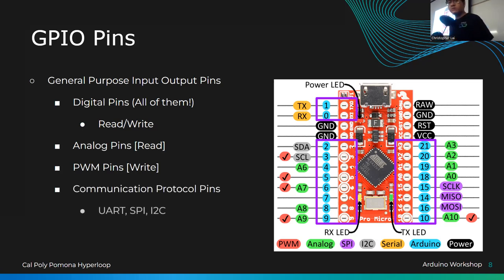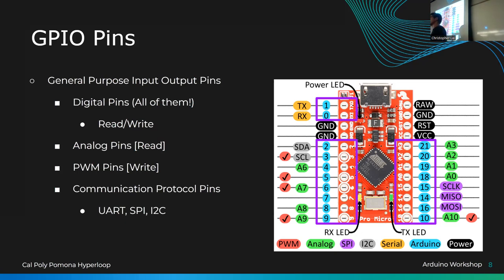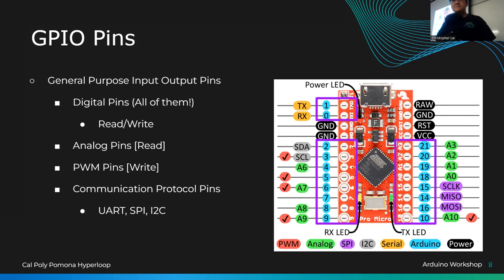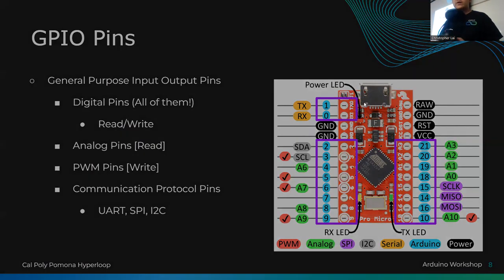There are also communication protocol pins — we won't go in depth here, but sensors we use today do use these signals. For SPI and I2C you'll see labels like SDA and SCL for I2C, and SCLK, MISO, and MOSI for SPI. You don't need to know the exact science yet, just know they transfer data back and forth.